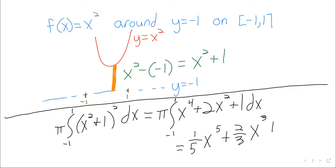At this point, the problem's basically done. I'll at least take the antiderivative: 1 fifth x to the fifth plus 2 thirds x cubed plus x. But you know how to finish this problem out by sticking 1 in there, sticking negative 1 in there, and subtracting.